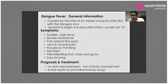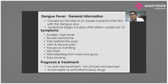In simple dengue fever, the patient will have myalgias, arthralgias, and high-grade fever of 101–102°F. It is undifferentiated — you cannot find a particular organ causing the fever and all these symptoms.